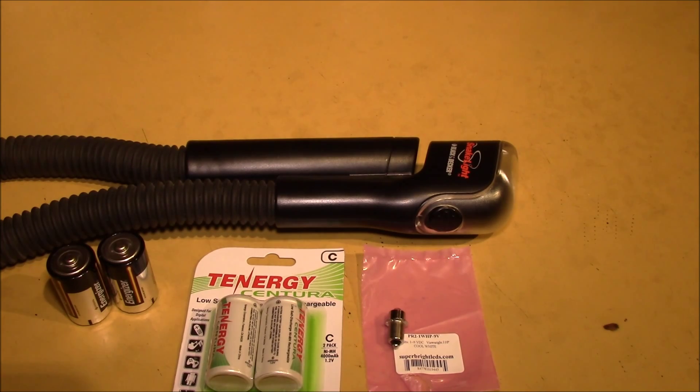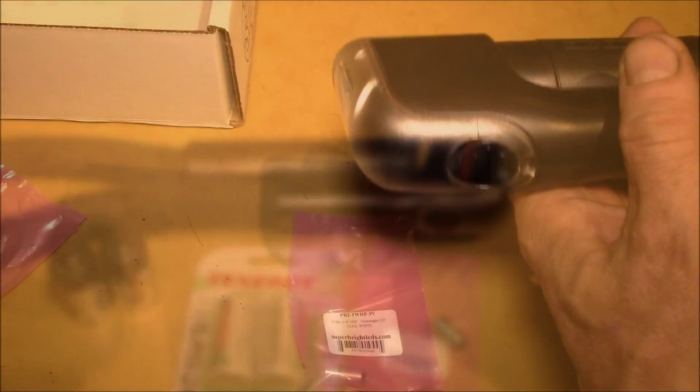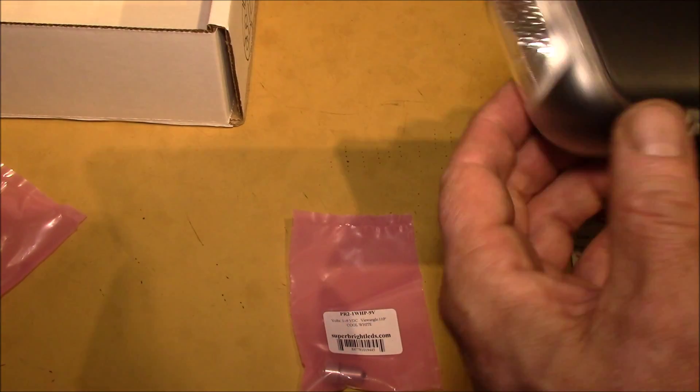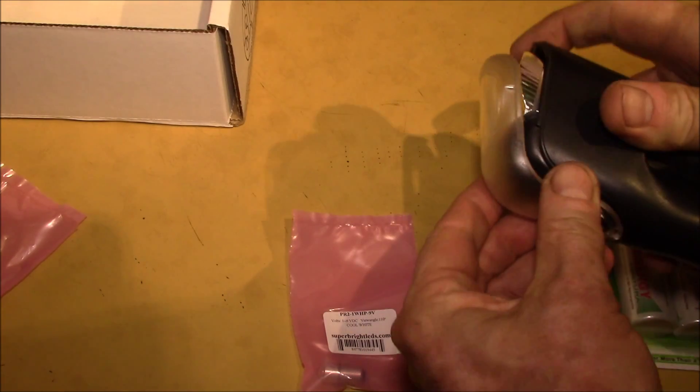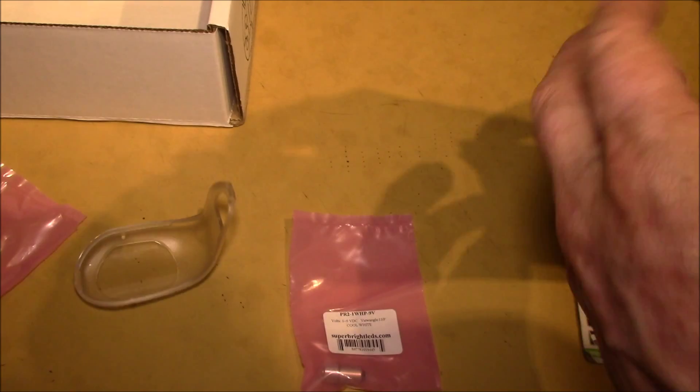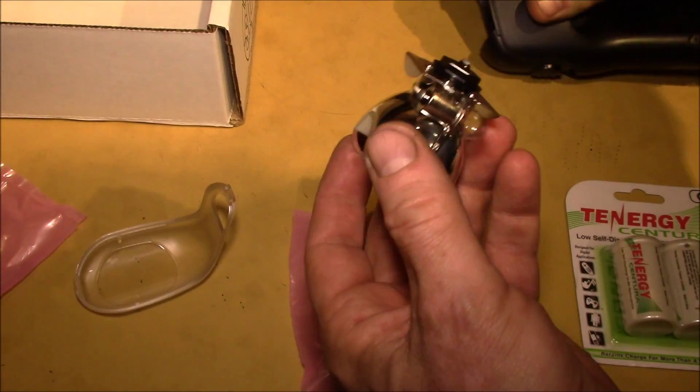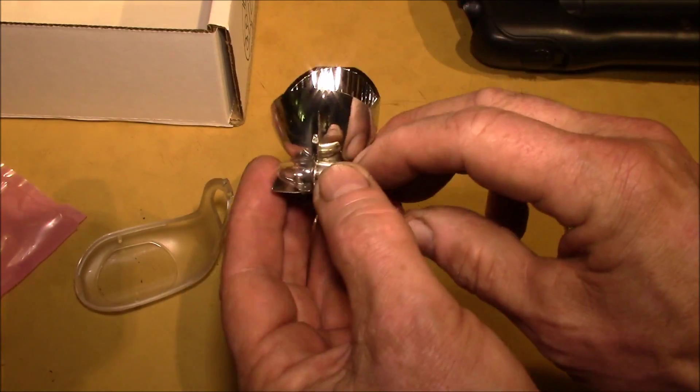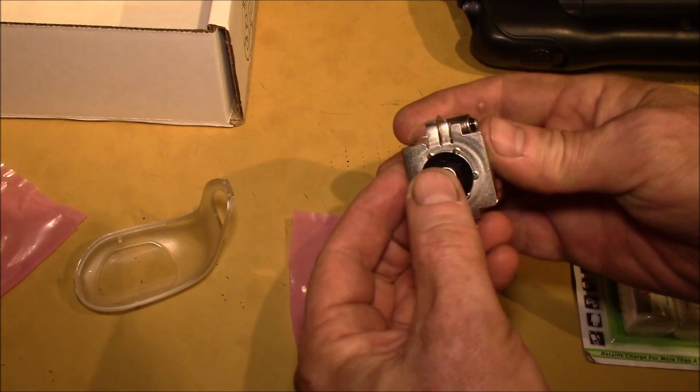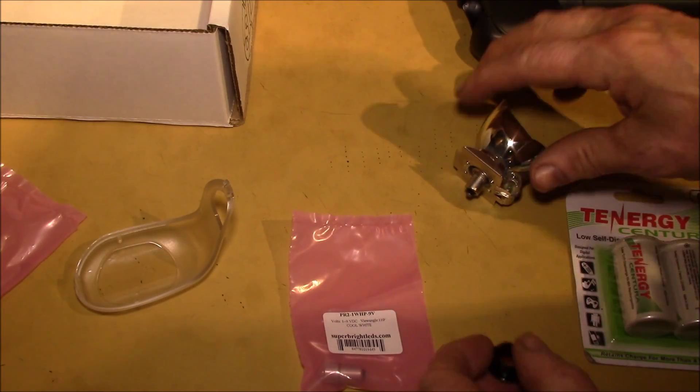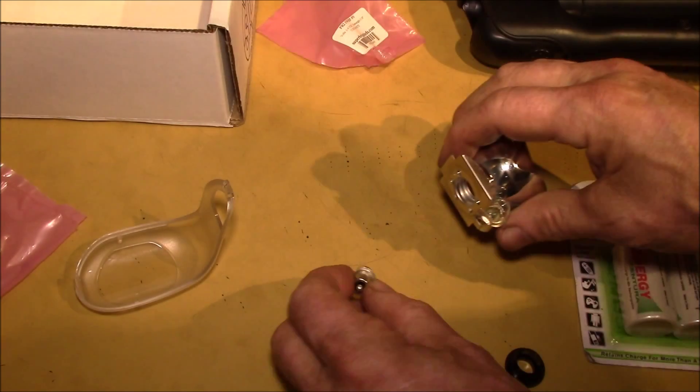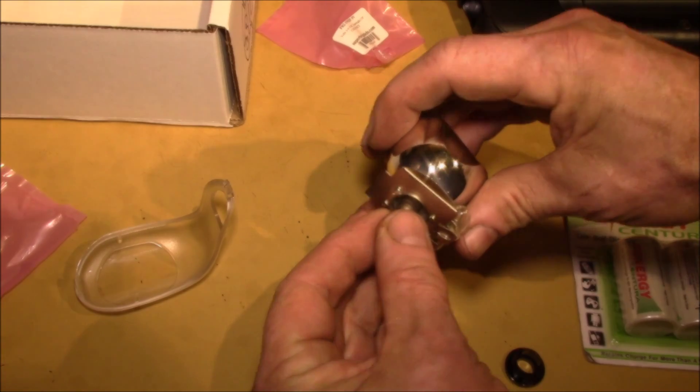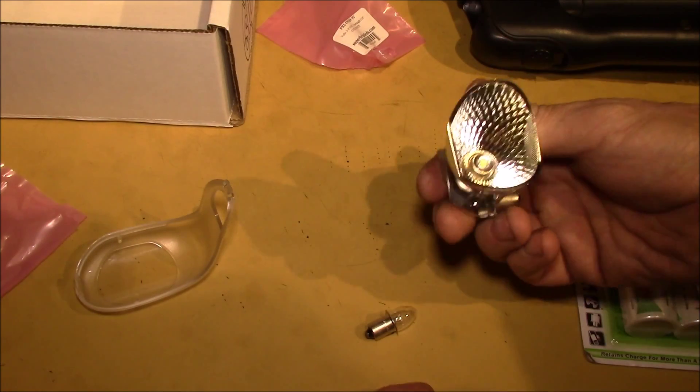This one's pretty easy to get the bulb out - you just pop that clip there and the cover comes right off. These are actually pretty neat - they give you a spare bulb inside. There's one in the unit and a spare one there. This is the wide angle one. We'll take out that bulb and replace it with this guy.